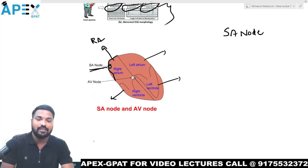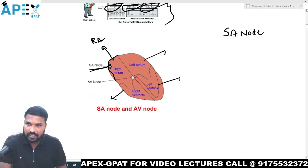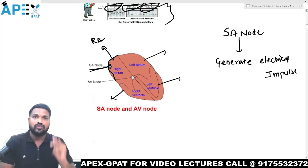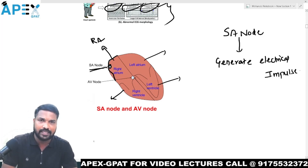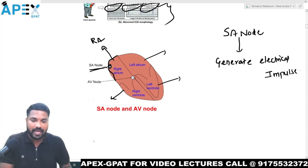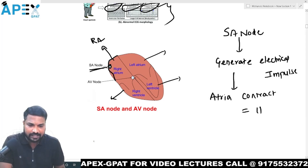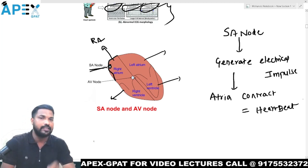What is the function of the SA node? The SA node generates electrical impulses. When electrical impulses are generated in the SA node, the atria contract — and this is what we call the heartbeat.